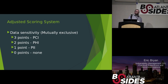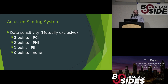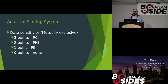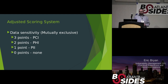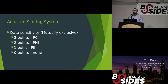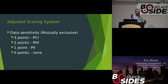Next up, data sensitivity. We have all three sensitive data types in our environment: PCI, PHI, and PII. PCI was given the most weight because of compliance. PHI — this grocery store also operates a pharmacy, so we had to consider that as well. And PII, personal identifiable information. They were scored accordingly, and they're mutually exclusive — if a system had all three data types, only the highest-scoring one would take effect.